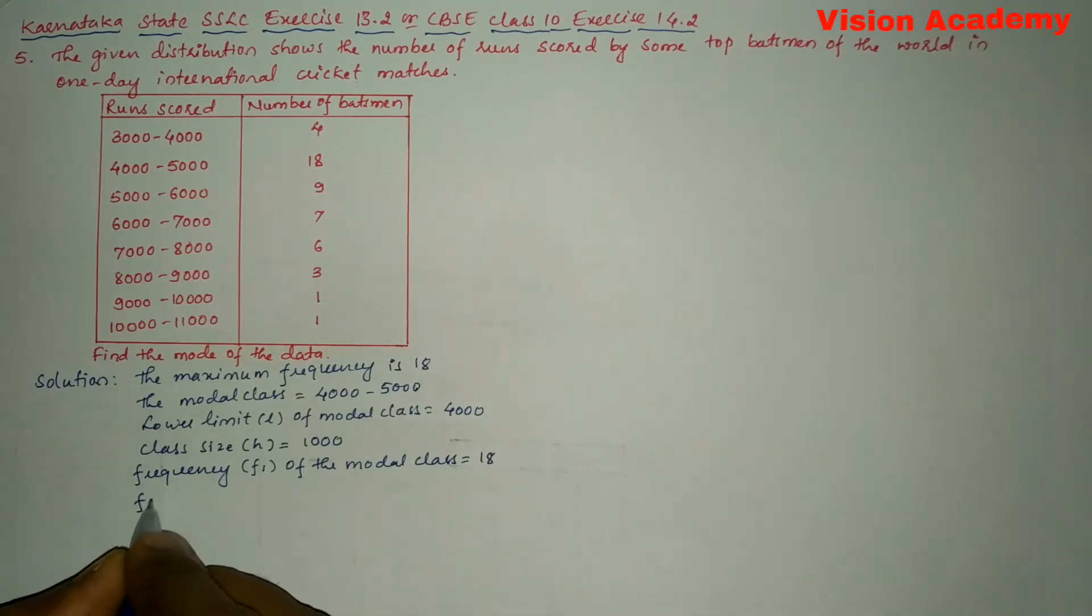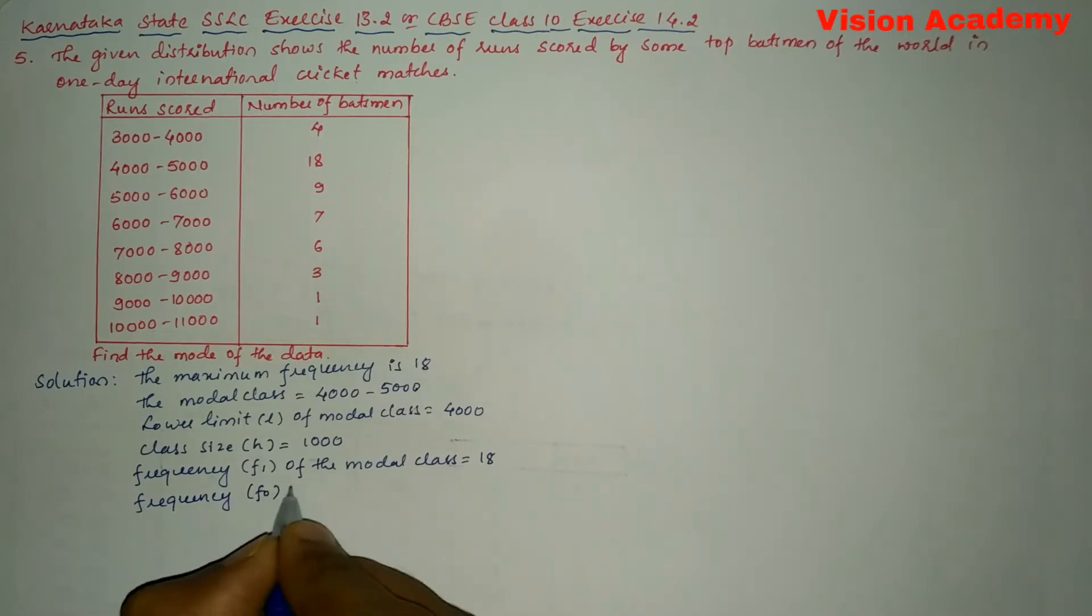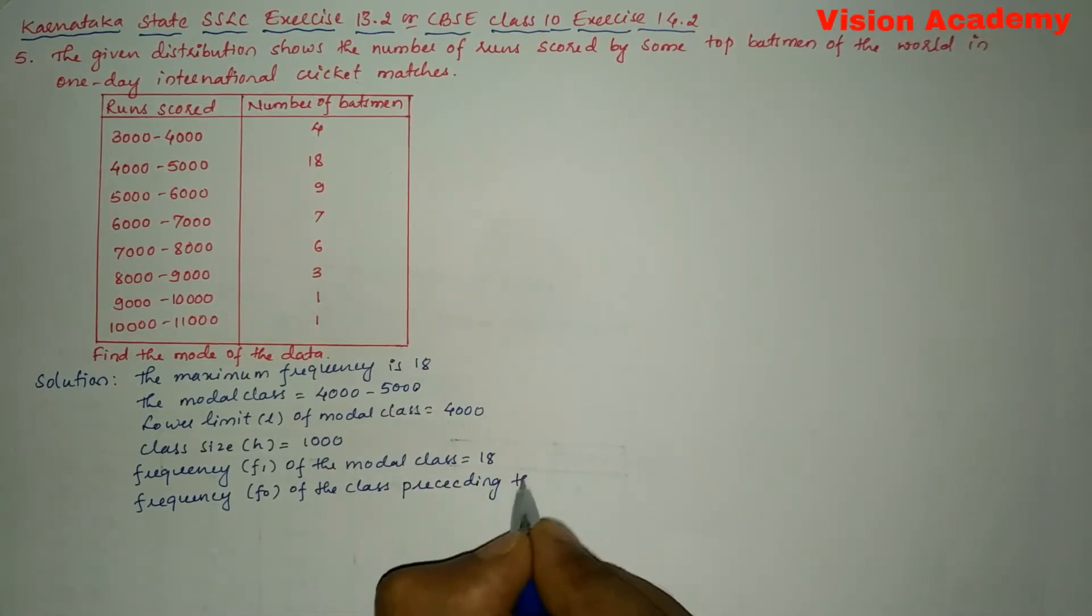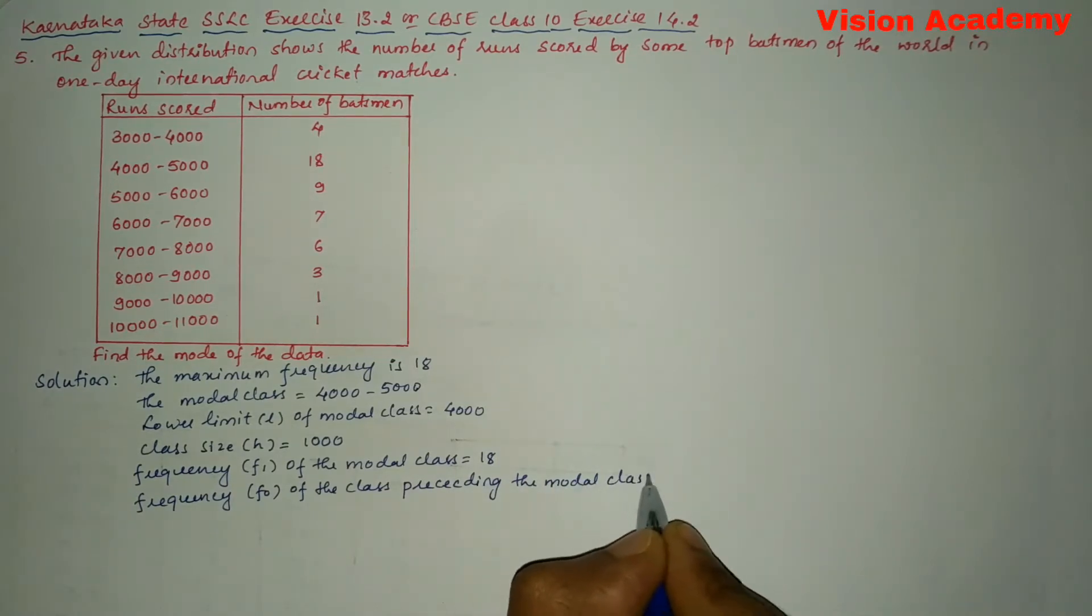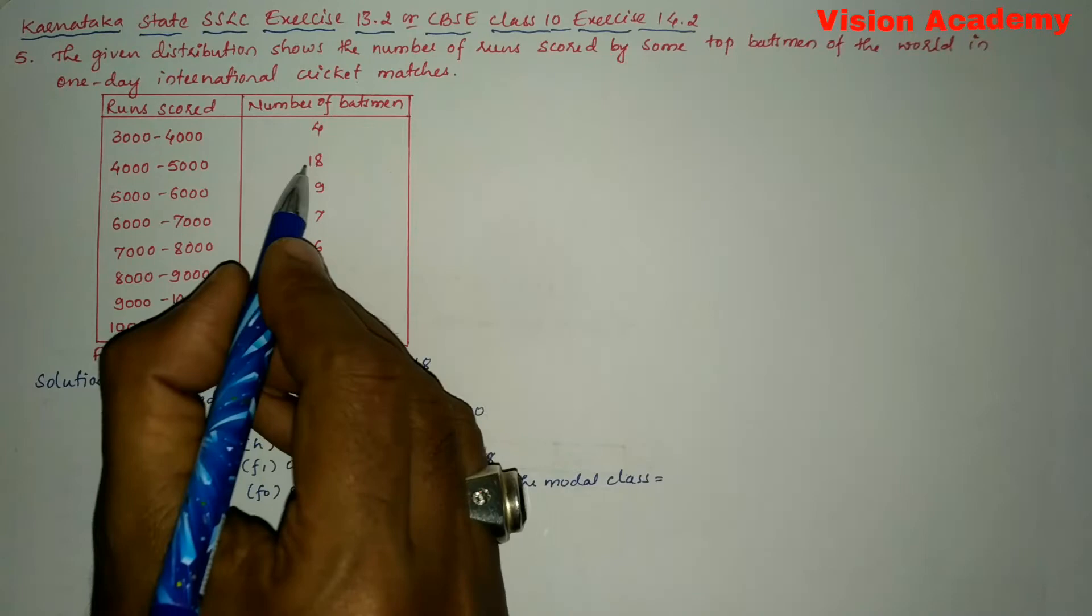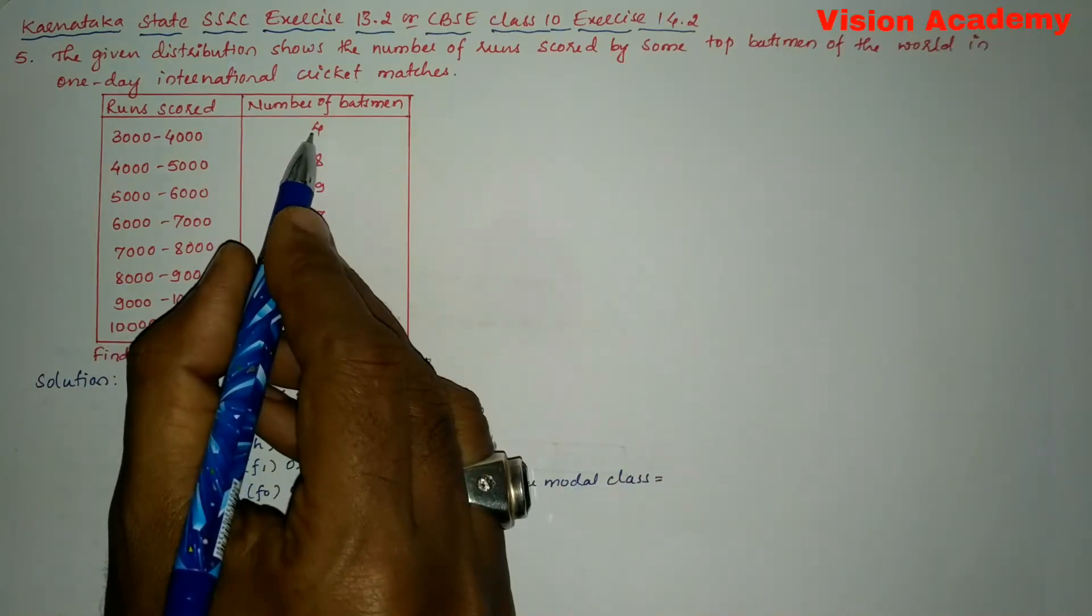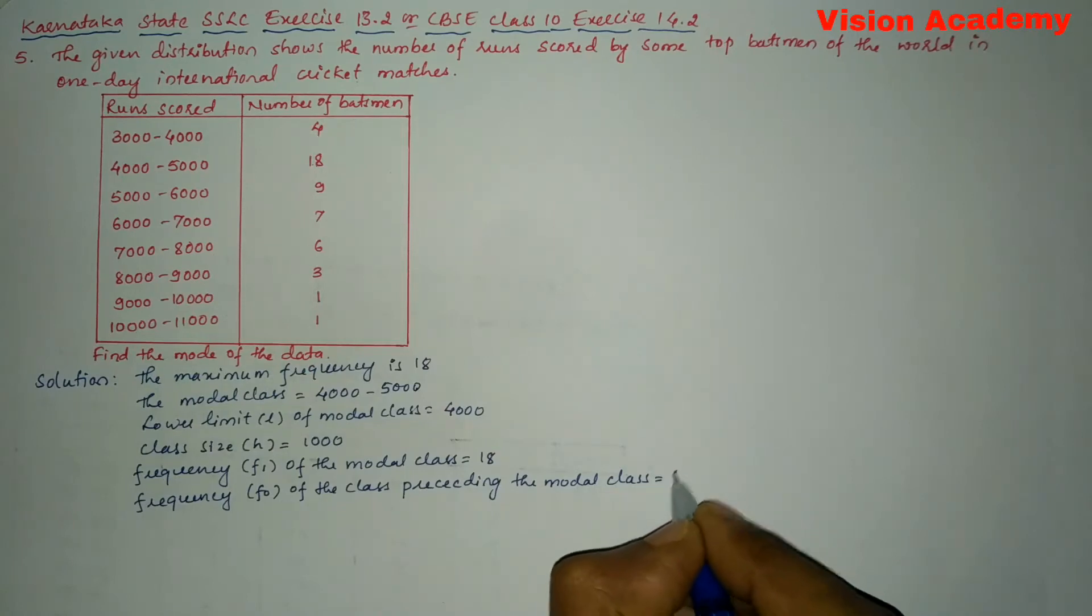Next we will write frequency f0 of the class preceding the modal class. You can see here preceding this modal class we have got the frequency 4.